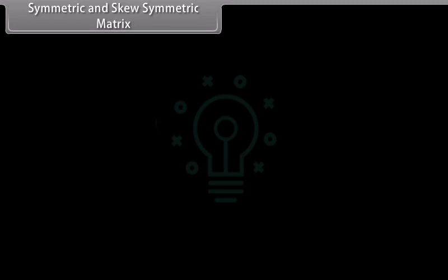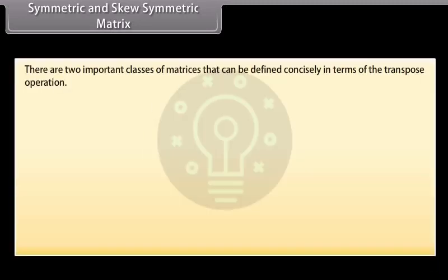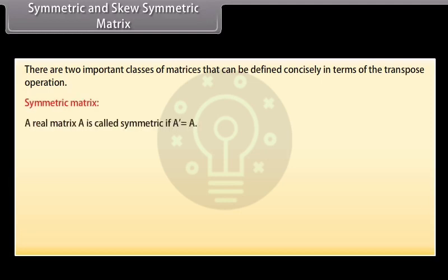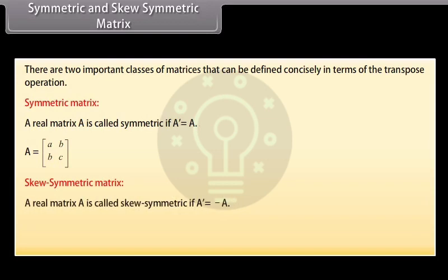Symmetric and skew-symmetric matrix. There are two important classes of matrices that can be defined in terms of the transpose operation. A real matrix A is called symmetric if the transpose of matrix A is equal to matrix A. A is a general 2 by 2 symmetric matrix. A real matrix A is called skew-symmetric if the transpose of matrix A is equal to minus matrix A. A is a general 2 by 2 skew-symmetric matrix.